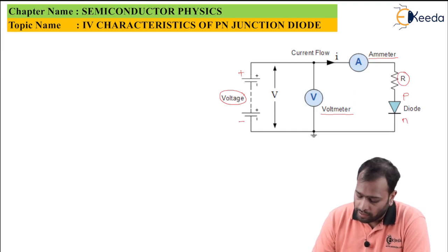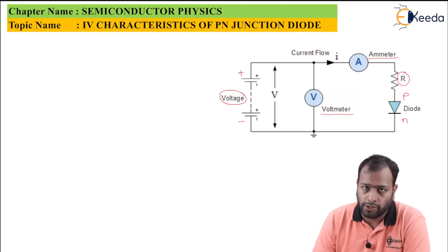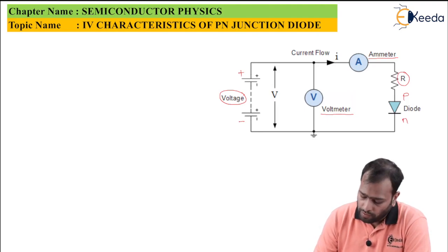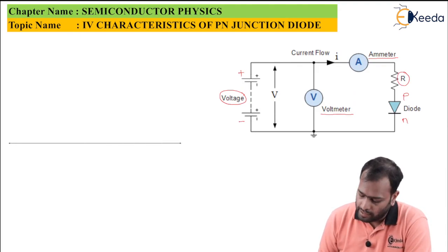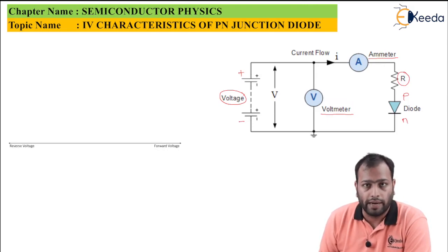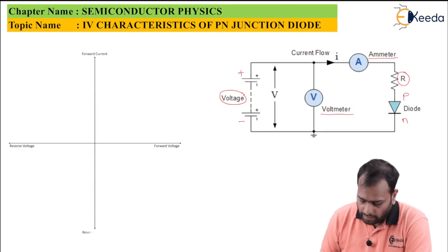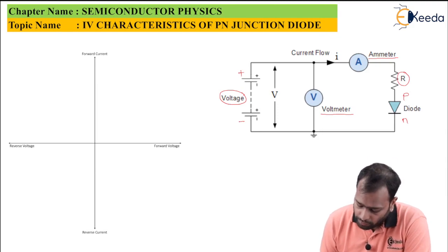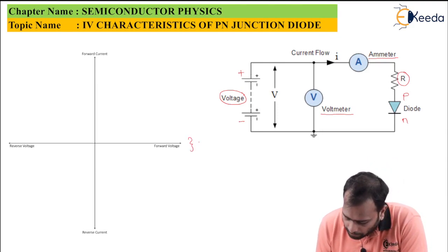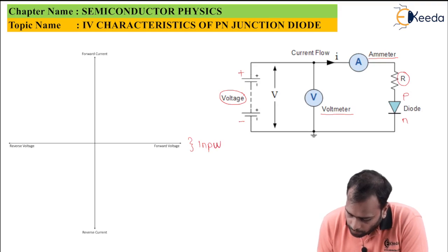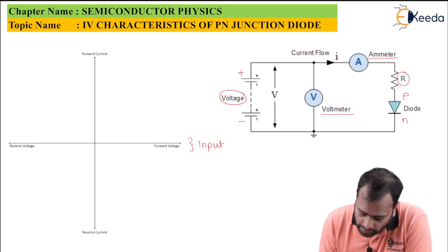To make the diode reverse biased, you simply reverse the voltage, and that voltage is called the reverse voltage. To plot the characteristics, we draw a graph: the X-axis has forward voltage on the positive side and reverse voltage on the negative side, while the Y-axis has forward current and reverse current.